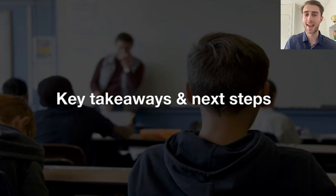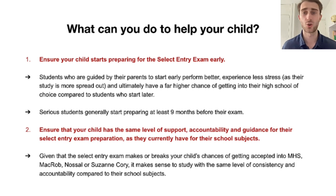The key takeaway here is that if you want to give your child the best chance of success, there's two things that you can do. The first one is obviously making sure they begin preparing early, so most serious students start preparing about nine months before the exam. That's a good guide for when you want your child to start preparing if you want to give them the best chance and to be on the same playing field as other top performing students who are probably going to get in.